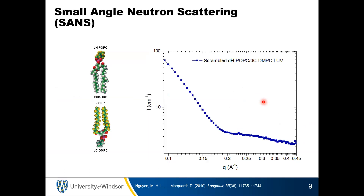Here's some real experimental data. We have a system where one lipid, DMPC, is chain-deuterated — all the hydrogens in the fatty acid chain are deuterium. The other lipid, POPC, has hydrogenated chains with a little deuterium in the head group. You can see how we're introducing a large amount of contrast into the system by substituting deuterium for hydrogen. This is what the data looks like for a symmetric bilayer — we call it a scrambled bilayer.